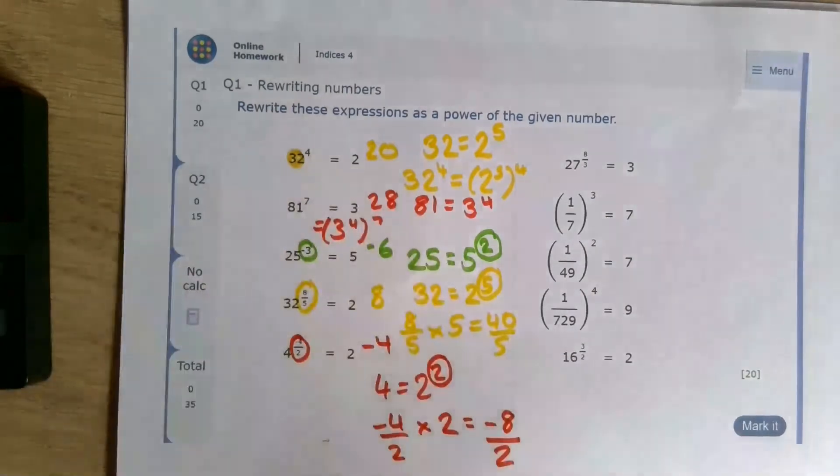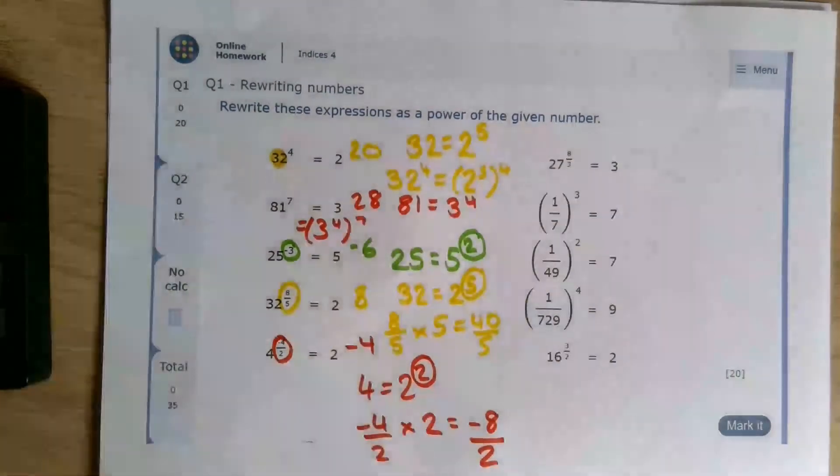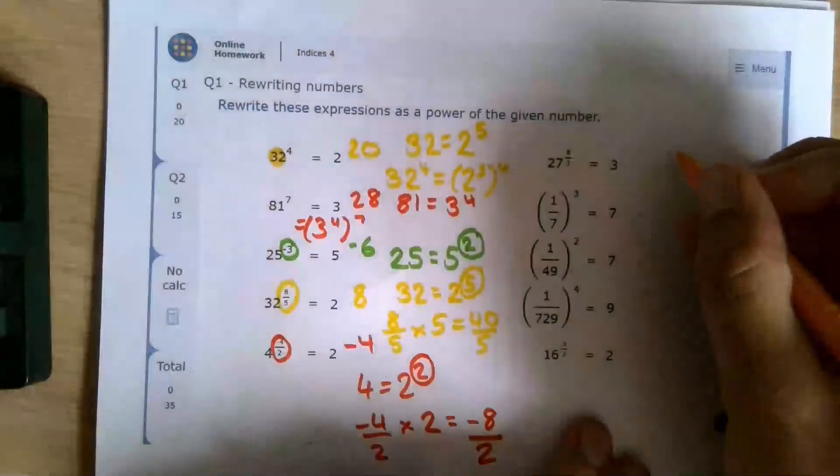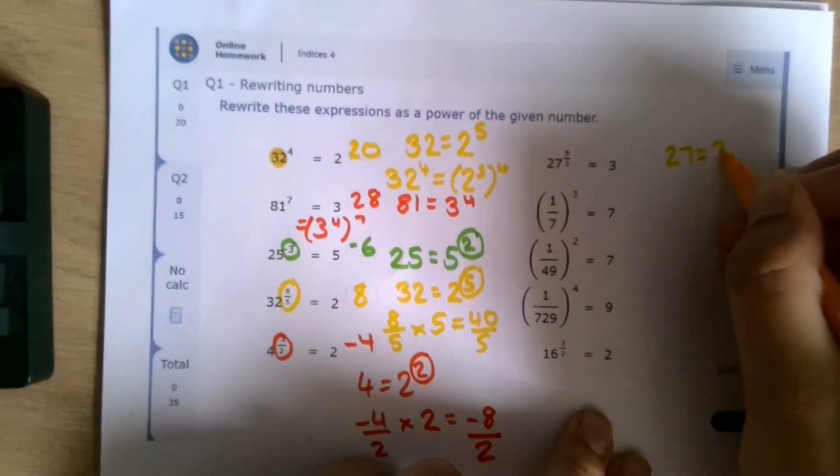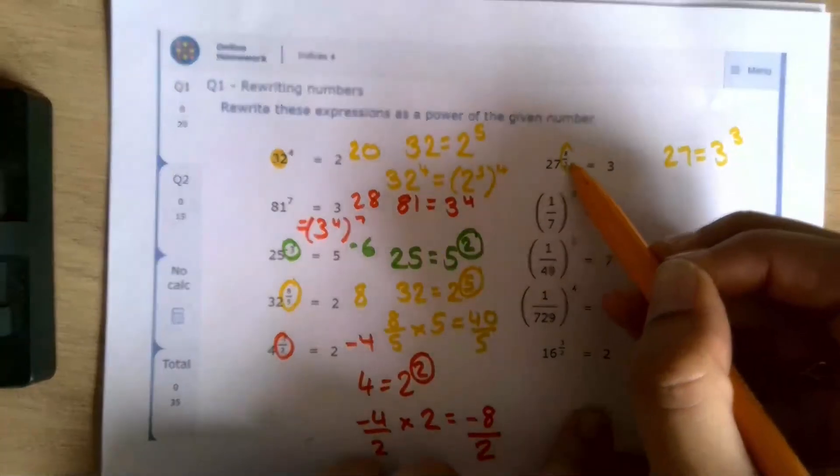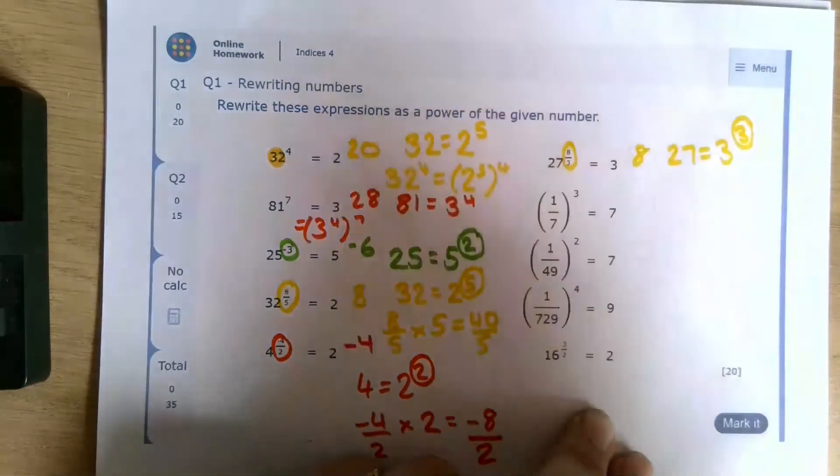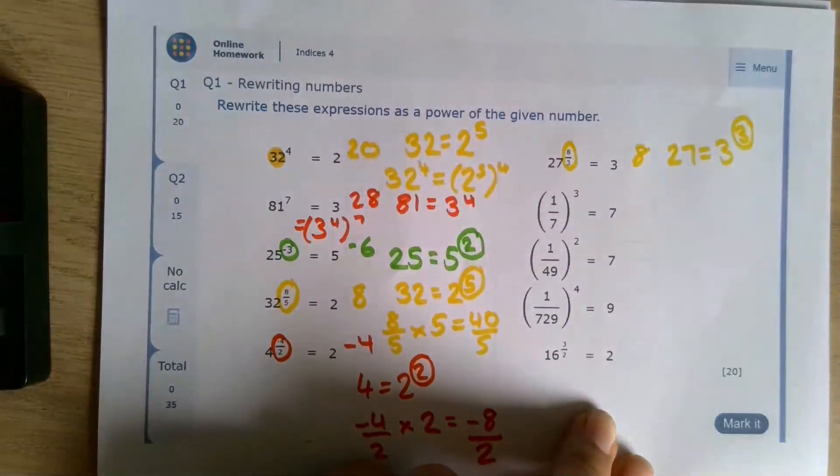Continuing on, we've got 27. 27 is 3 to the power of 3. So we're going to do 8 thirds times 3. As we've just said, they cancel each other out nicely. That just gives us 8.